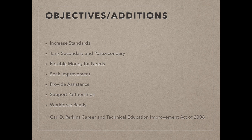In order to complete this goal, the act had to hit on seven main points. They need to increase the rigor of the standards and integrate the CTE standards with regular academic standards. There needs to be a link between secondary and post-secondary CTE courses. The grant money needs to be available for the improvements that are taking place. Assistance needs to be provided for all the parties involved. Partnerships need to be formed not only with the classroom, but with the community as well. Students need to be able to leave the program workforce ready.